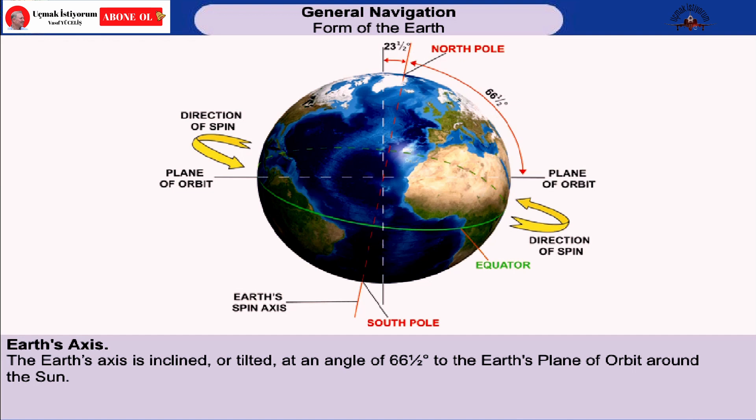The Earth's axis is inclined, or tilted, at an angle of 66.5 degrees to the orbital plane. The inclination is sometimes stated as 23.5 degrees to the normal to the Earth's orbital plane — that is, 90 degrees minus 66.5 degrees equals 23.5 degrees.